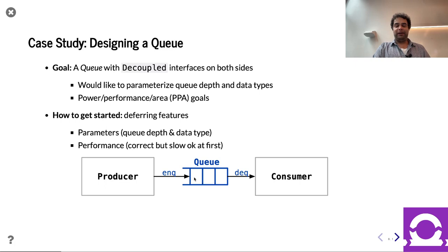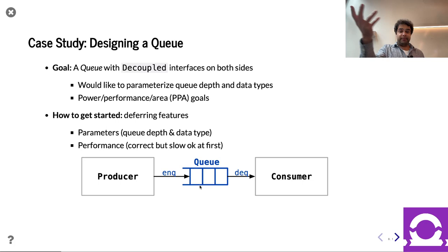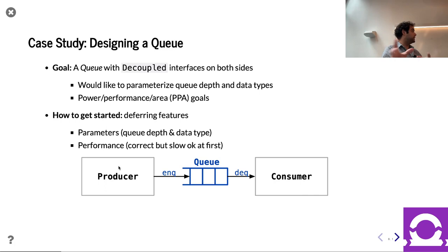So what is the queue? It's a FIFO — things come in, things come out in the same order. Both interfaces use decoupled. We want a parameter for how many entries are in the queue as well as the data type. And we want reasonable performance — we don't want to build a queue that's going to take tons of area or be really slow. How can we get started on this task? It seems kind of simple, but after you start writing Chisel, you'll very quickly find there's quite a bit to figure out.